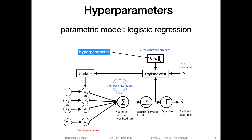Just to show you an example of a parametric model — here's a drawing of logistic regression. That's something we cover in more detail in statistics 453, because it's a great introduction to deep learning — you can think of it as a single layer neural network. So in this class, we don't cover it in much detail because it takes one to two lectures when we talk about gradient descent and things like that, and we will cover that in 453.